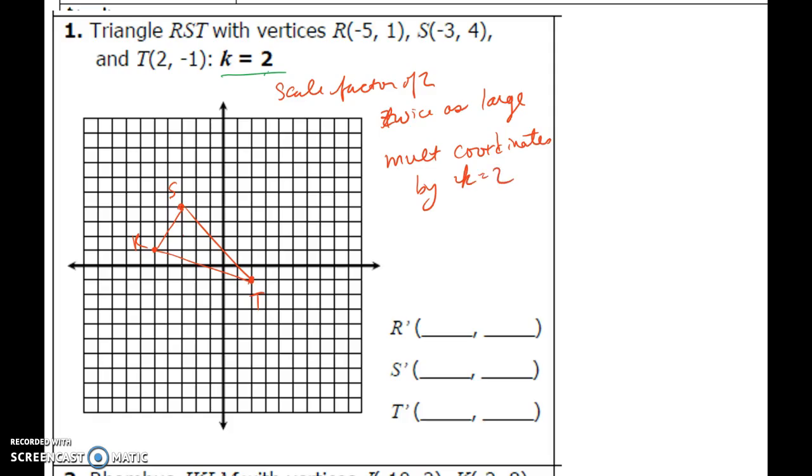So that's all I'm going to do. I don't like to try to do it from the picture because it's hard for my brain. I would just do it here. I would take R and double it. So it's now going to be negative 10, 2. I'm just multiplying by 2. S multiply by 2, negative 6, 8. And then T multiply by 2. So hopefully if you're a good multiplier, then you'll be fine.